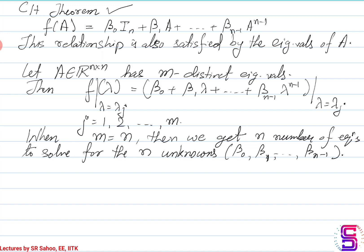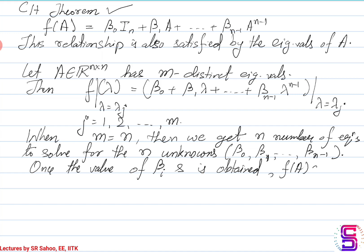So when m equals n, then we get n number of equations to solve for the n unknowns beta_0, beta_1, till beta_{n-1}. Once the value of beta_i is obtained, F(A) can be solved for.